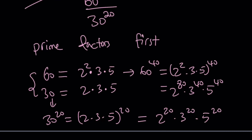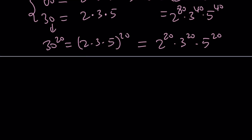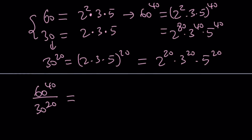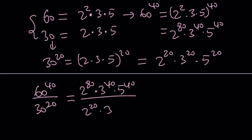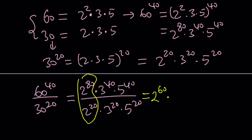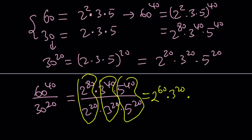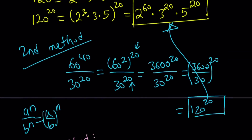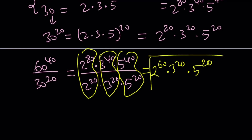Doing prime factorization on numbers, especially large numbers, is almost always a good thing because it breaks down everything — kind of like an atomic structure. Prime numbers are the building blocks of numbers. So the numerator is 2 to the power of 80 times 3 to the power of 40 times 5 to the power of 40, divided by 2 to the 20, 3 to the 20, and 5 to the 20. Simplifying piece by piece with the same bases: subtracting exponents gives 2 to the power of 60, 3 to the power of 20, and 5 to the power of 20. Comparing this result to the other methods, we get the exact same answer — as it should always be.